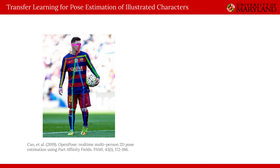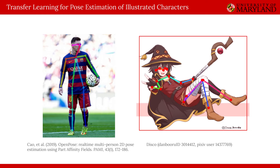2D human pose estimation is a foundational computer vision task with many real-world applications, such as activity recognition, 3D reconstruction, motion tracking, etc. However, the usefulness of pose estimation is not limited to the natural image domain. A pose estimator for illustrated characters may serve as a useful prior for downstream non-photorealistic tasks, like illustration colorization, character reconstruction, animation keyframe interpolation, etc.